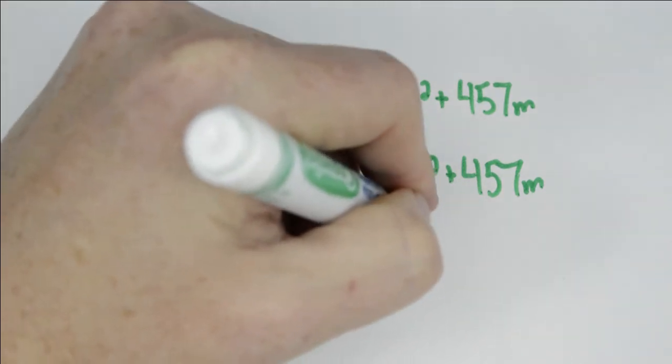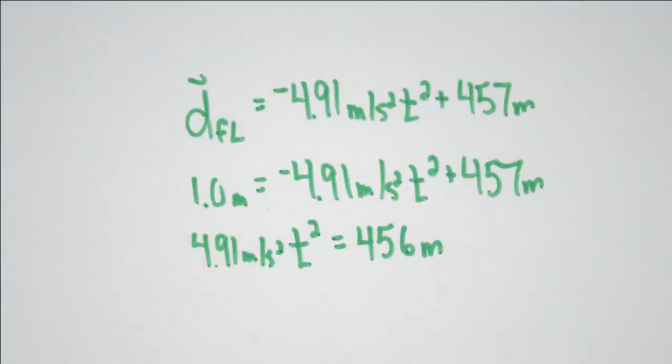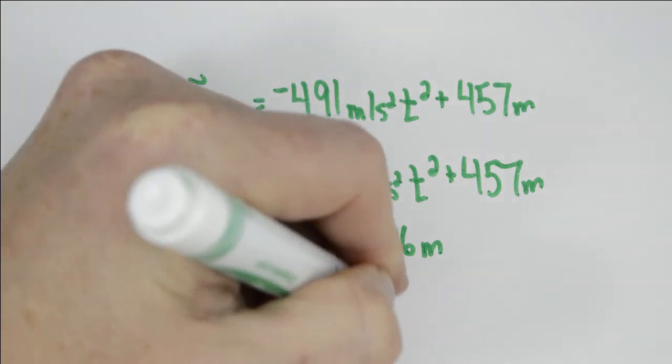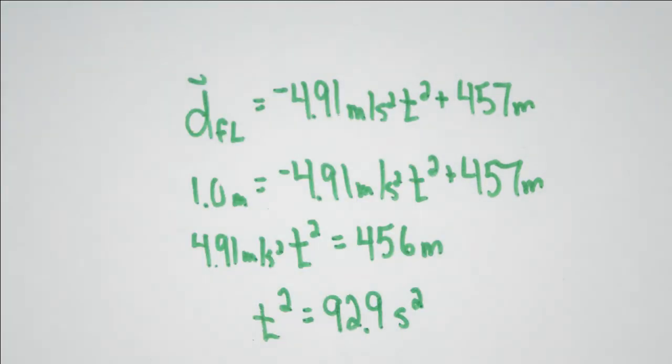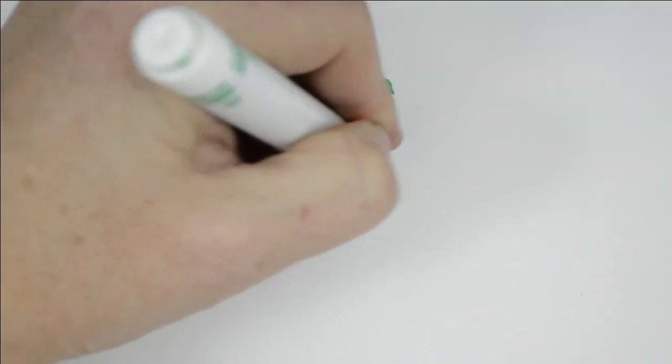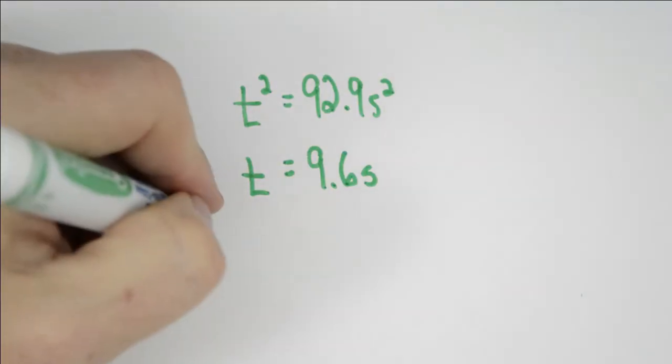So we're going to take the 457 meters to the other side, which means that she falls 456 meters under the influence of gravity. This gives us that t squared is 92.9 seconds. Therefore, we take the square root of both sides, and that gives us the time to fall of 9.6 seconds.